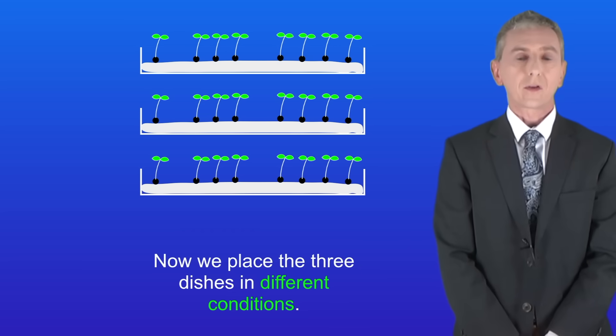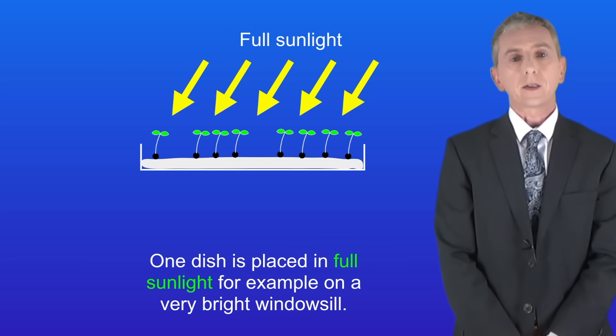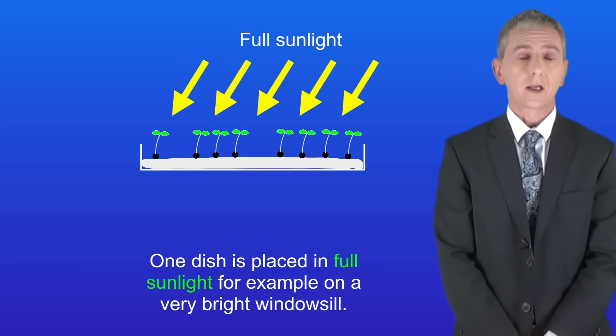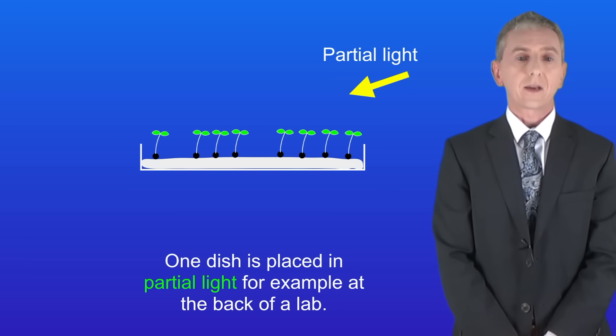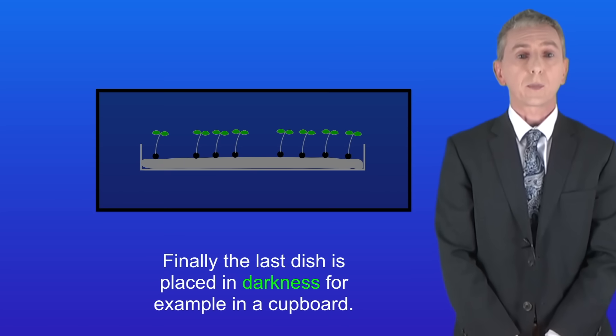Now we place the three dishes in different conditions. One dish is placed in full sunlight, for example on a very bright windowsill. One dish is placed in partial light, for example at the back of a lab. And finally the last dish is placed in darkness, for example in a cupboard.